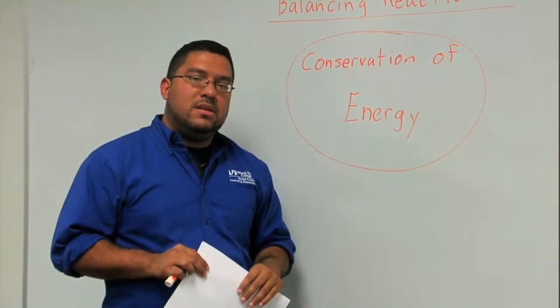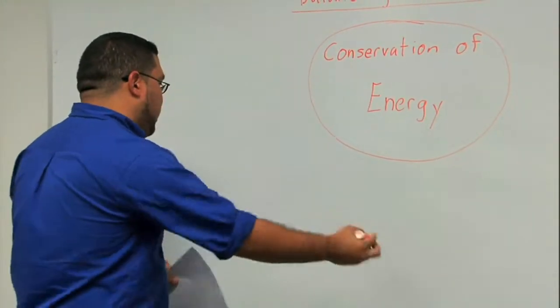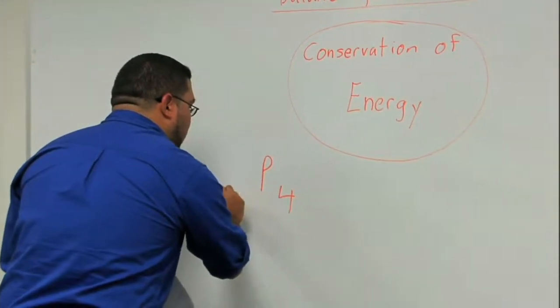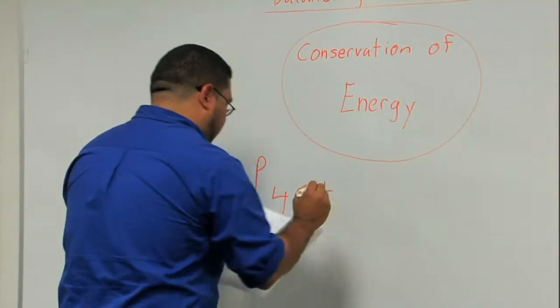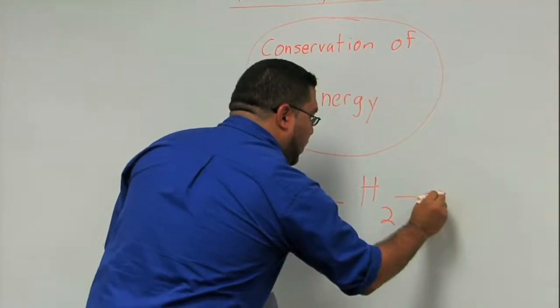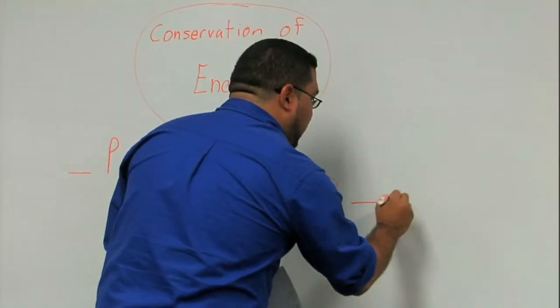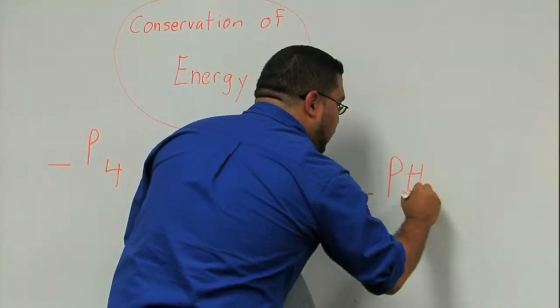So when you're given a chemical reaction, let's use an example: four phosphorus (P₄) plus hydrogen (H₂) producing a compound like PH₃.